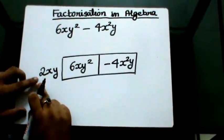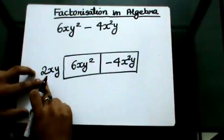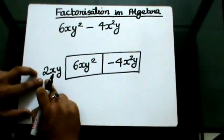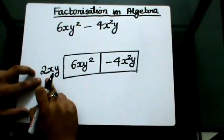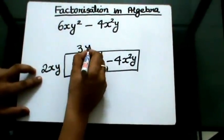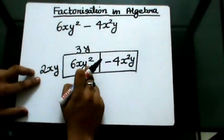Now I will think about a term which will give me 6xy² when I multiply that with 2xy. So that will be 3y. If I multiply 3y with 2xy, I get 6xy².